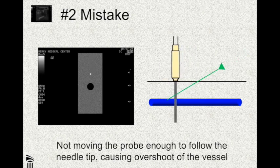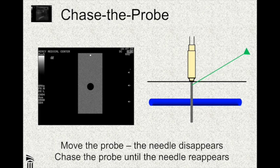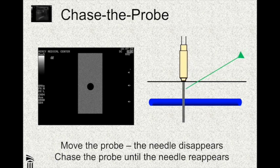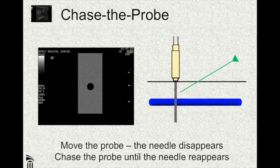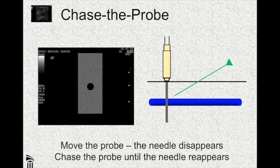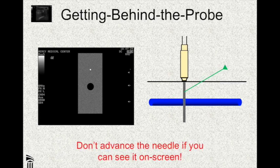To prevent this, you use what I call the chase the probe method. This is where you move the probe ahead of the needle — it's going to disappear from screen, and then you chase it with the needle. You move the probe, it disappears, and then you chase it with the needle. You know you've caught up when it reappears on screen. You do this stepwise until you see that needle go into the blood vessel. Remember: if you can see the needle on screen, you should not move the needle, because then you're doing the getting-behind-the-probe method, which doesn't work.